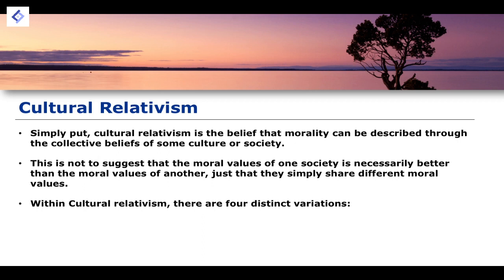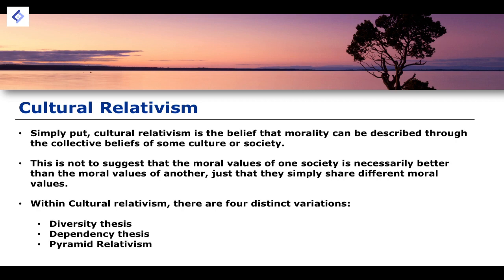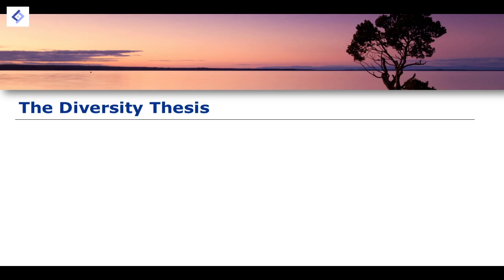Within cultural relativism, there are four distinct variations that look not just at how societies and different cultures develop their own moral frameworks, but also the why. We have the diversity thesis, the dependency thesis, an idea known as pyramid relativism, and then we also have the concept of conventionalism. The rest of this lesson is going to look at each of these different theses and discuss what they mean.